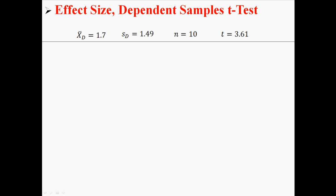So this is the data that I had in my Dependent Samples t-test example from a few lectures ago. We knew that the average difference was 1.7, the standard deviation of the difference was 1.49, the sample size was 10, and our t was 3.61.